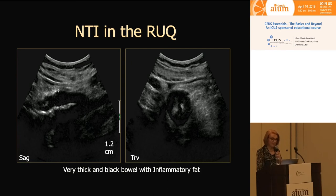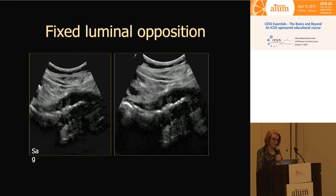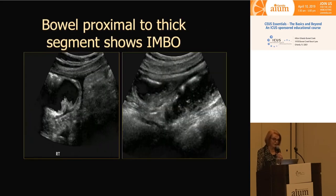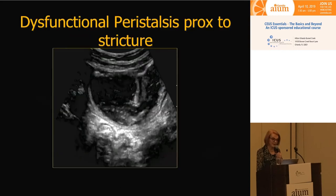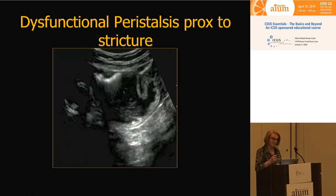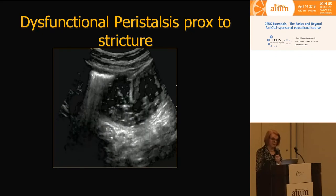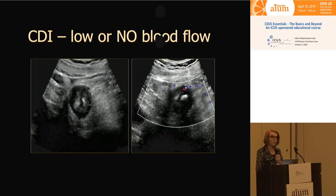This is a 49-year-old male who has had Crohn's disease since 1982, presenting with obstructive symptoms. He's been on no medication for many years and had one prior surgery — a right hemicolectomy. Looking at his neoterminal ileum, his bowel has no bowel wall layers and is grossly thickened to 1.2 centimeters. This very thick bowel with no wall layers shows fixed luminal apposition over about 12 to 15 centimeters, looking like a big stricture. Looking at the bowel proximal to that thick segment, there's evidence of incomplete bowel obstruction — with anterograde and retrograde peristalsis in the same loop, which are never normal observations.